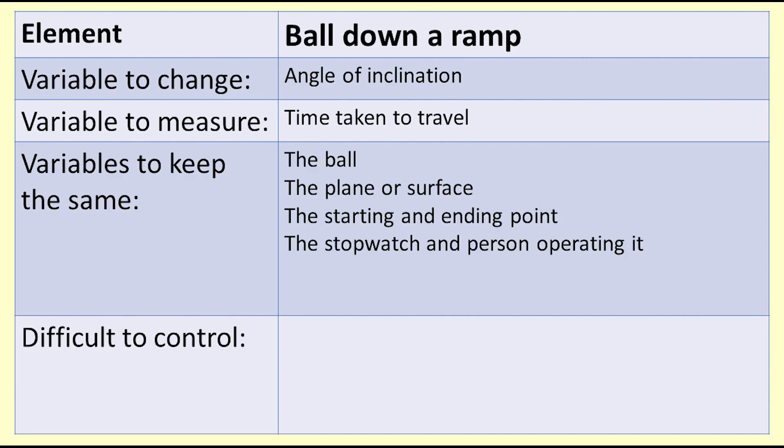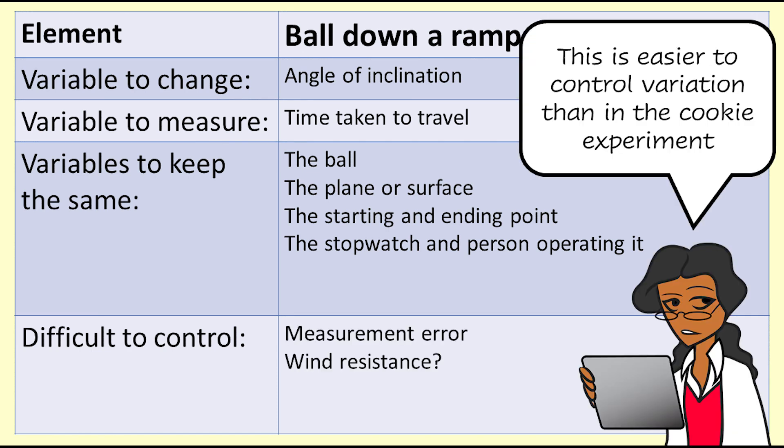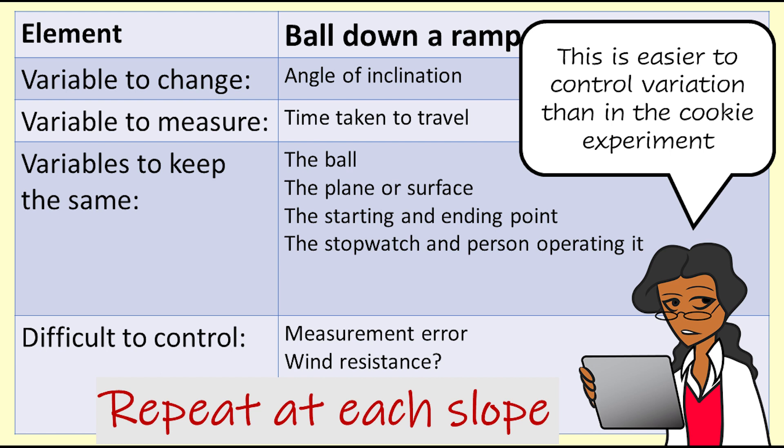Here is a list of some variables to keep the same: the same ball, the same plane, the same starting and ending point, the same stopwatch and the same person operating it. Even though we have controlled as much as we can, there will still be a little bit of variation including measurement error. So to reduce the impact of that variation, we perform several tests at each angle and find the average value. This is a physics way of doing experiments.